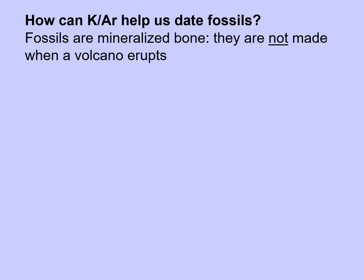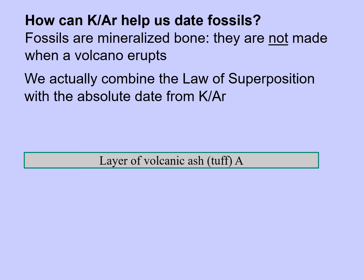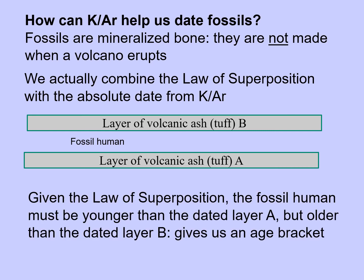How can potassium-argon dating help us date fossils? Fossils are mineralized bone, so they're not made when a volcano erupts. Actually, we combine the law of superposition with the absolute date from potassium-argon dating. For example, a volcano erupted and left a layer of ash — layer A. Afterwards, humans lived on that spot and died there, and their bones became fossilized. Later, another layer of volcanic ash was laid down — layer B. Given the law of superposition, the fossil humans must be younger than dated layer A but older than dated layer B. By dating the two layers of volcanic ash, we get an age bracket for the fossil humans in between.